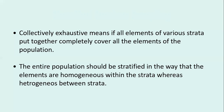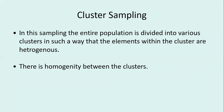That is stratified random sampling. The third type of sampling in restricted probability sampling is cluster random sampling. In cluster random sampling, the entire population is divided into different clusters such that within each cluster the elements are heterogeneous.